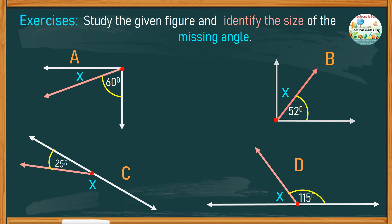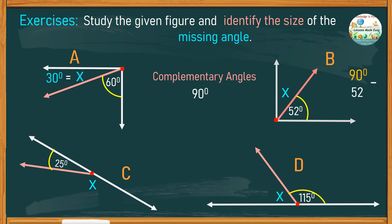Let's start with figure A. If complementary angles add up to 90 degrees and the given angle is already 60 degrees, therefore the other must be 30 degrees. Do the same with figure B. From 90, you subtract the given 52 degrees and we still have 38 degrees left. Therefore, angle X is 38 degrees.